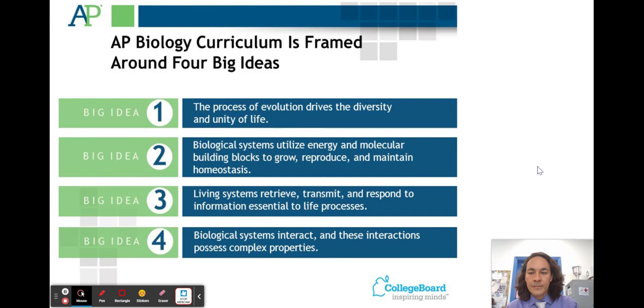Here are the big ideas, and we call it E squared, I squared. Evolution, so evolution drives the diversity and unity of life. Energy, so biological systems utilize energy and molecular building blocks to grow, reproduce, and maintain homeostasis. And that dynamic homeostasis is really important, achieved through negative and positive feedback loops.